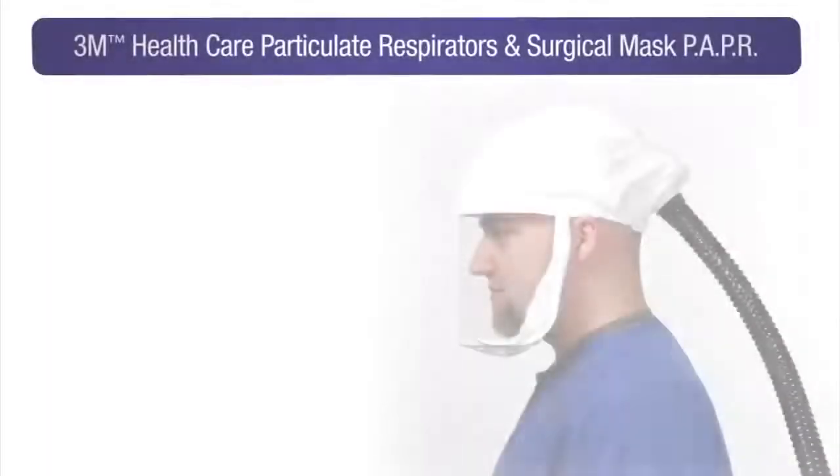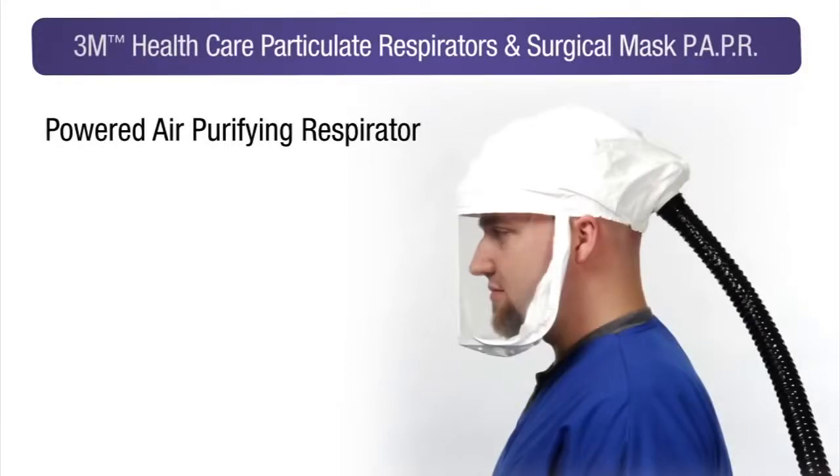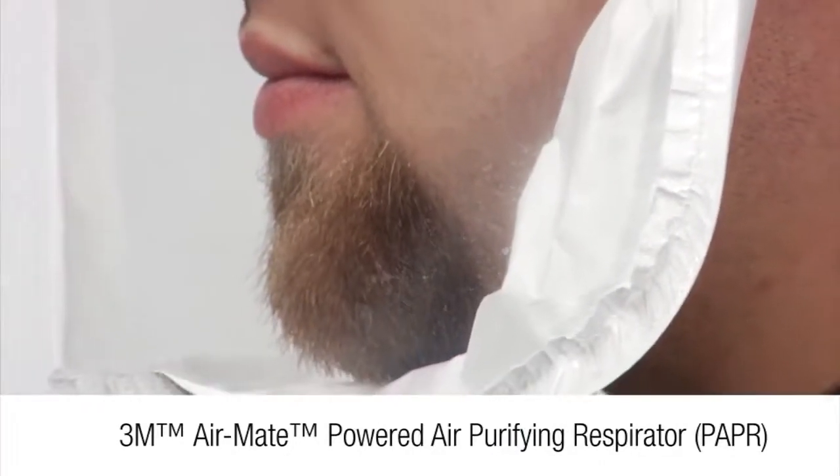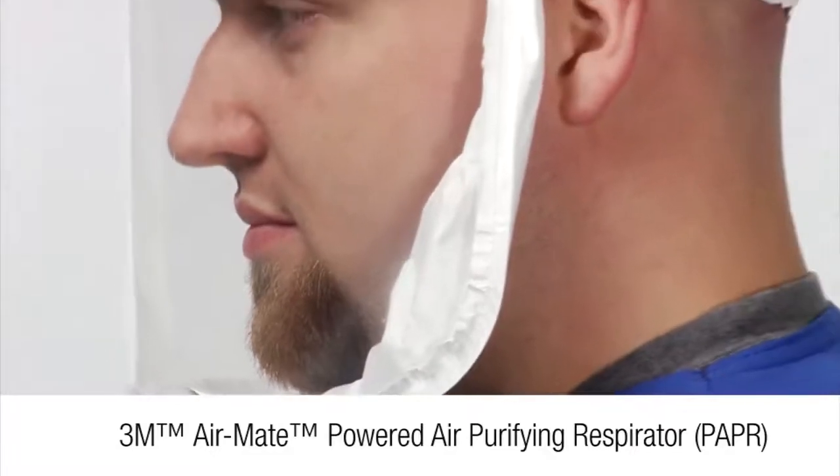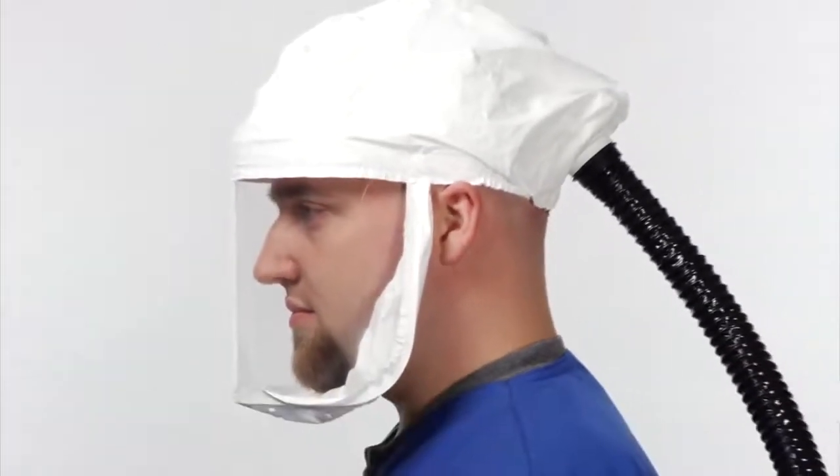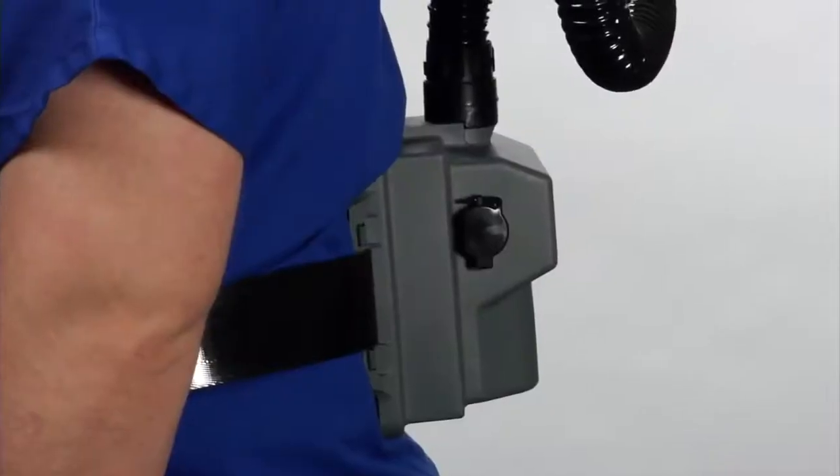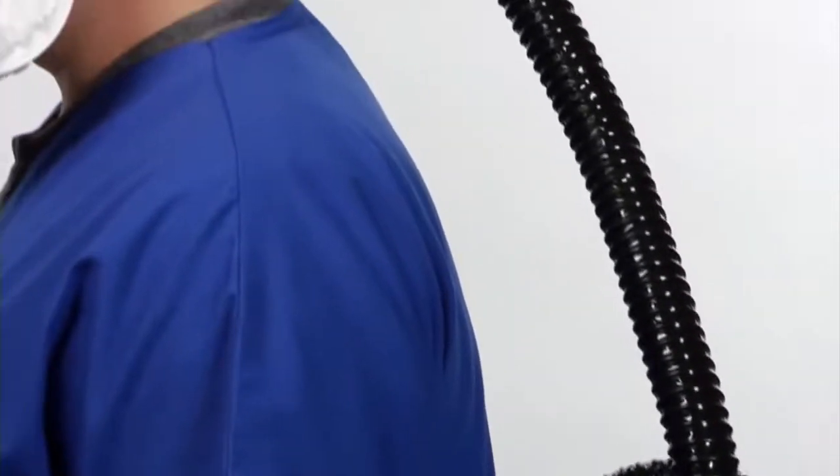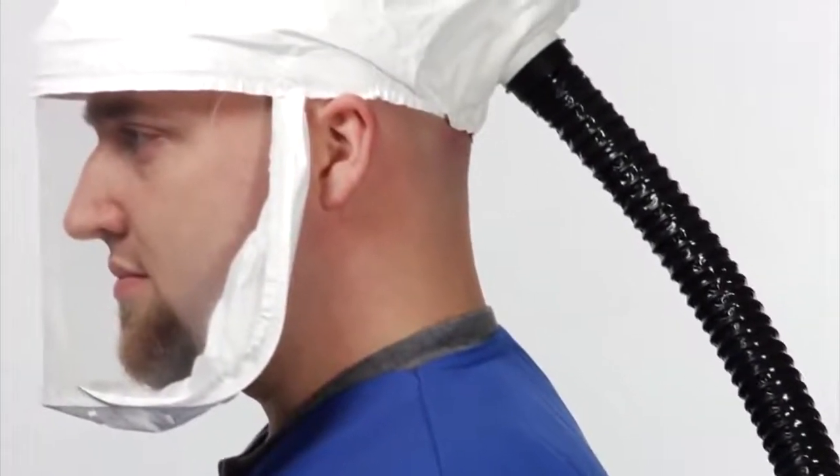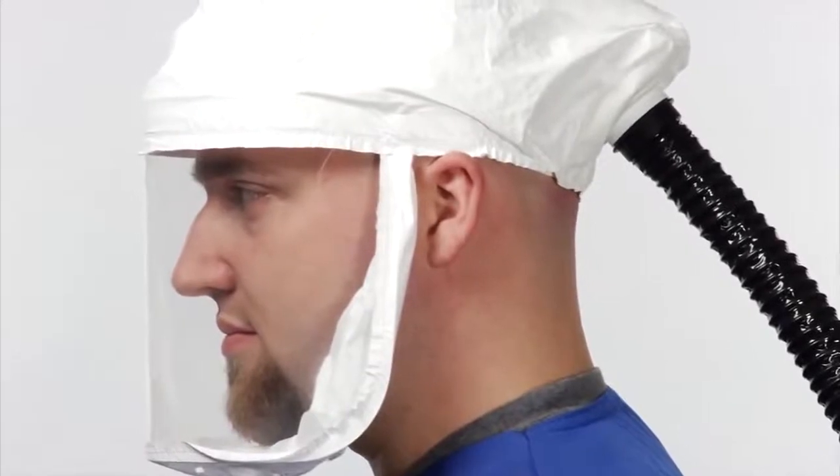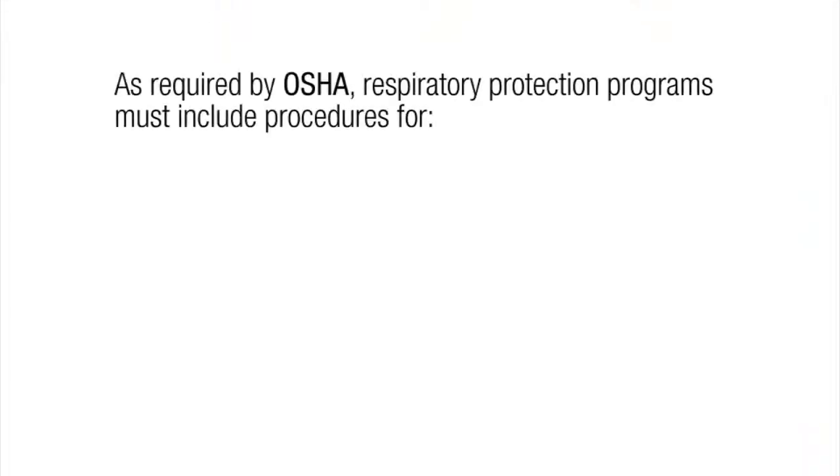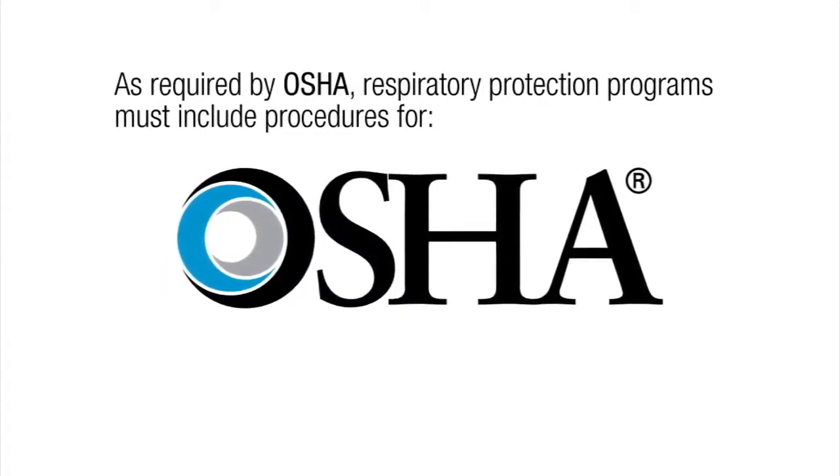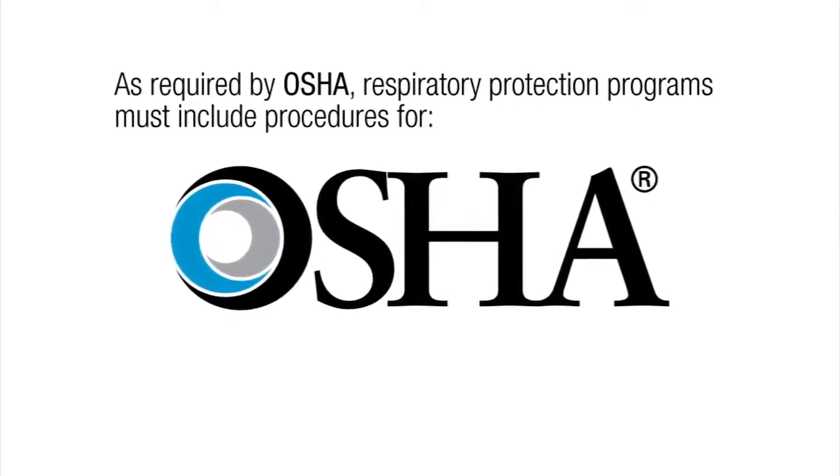There are many other types of respirators available on the market including powered air purifying respirators or PAPRs. PAPRs equipped with a loose-fitting facepiece or hood may be an alternative for a bearded healthcare worker or those who otherwise are unable to pass a fit test on another type of respirator because PAPRs do not need to be fit tested. PAPRs use a motor and a blower to force air through air purifying elements into a loose-fitting facepiece or hood that generally covers the entire face and head. A battery and cartridge are often housed in a separate unit which is mounted at the waist of the user. PAPRs must be used in connection with the same OSHA respiratory protection standard that covers use of all respiratory protection equipment in the workplace, OSHA 29 CFR 1910.134.